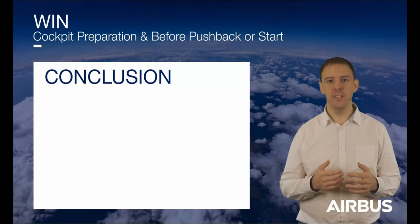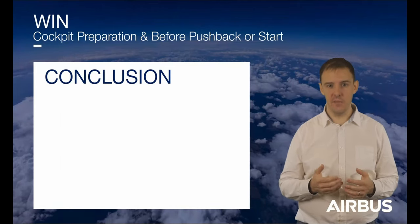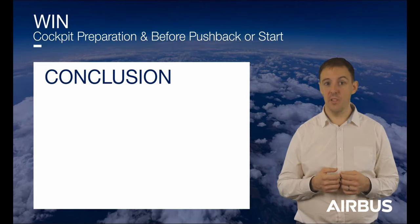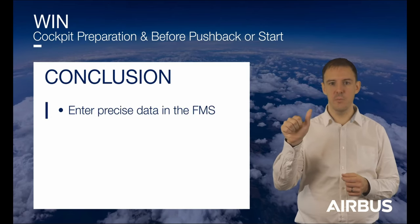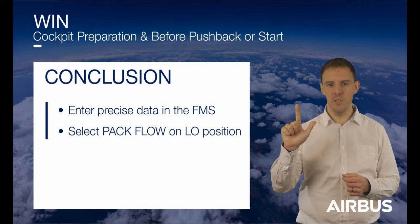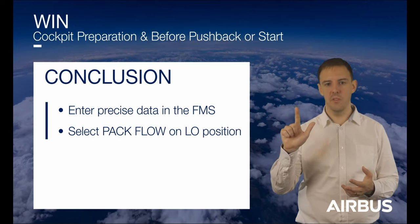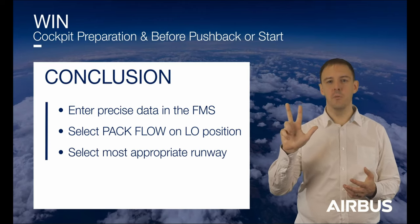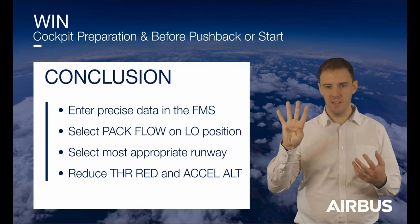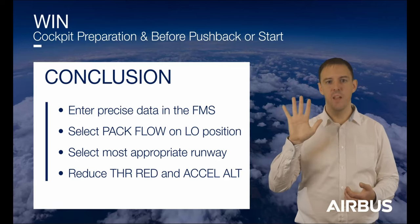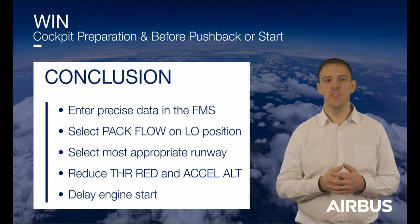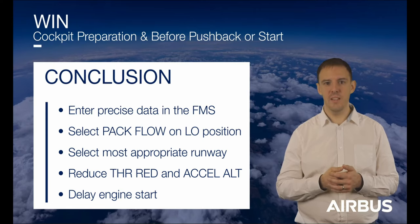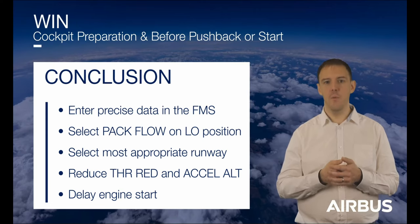To conclude, during cockpit preparation and before pushback or start, fuel savings and reduction of CO2 emissions are possible. To achieve the best aircraft efficiency, you should: insert the most precise data in the FMS; use pack flow on the low position depending on the number of people on board; select the most appropriate runway; reduce the thrust reduction altitude and acceleration altitude as much as possible; and finally, delay the engine start. The sum of all these savings sets the path to the best aircraft efficiency, fuel savings, and reduction of CO2 emissions.